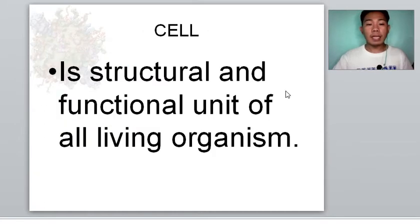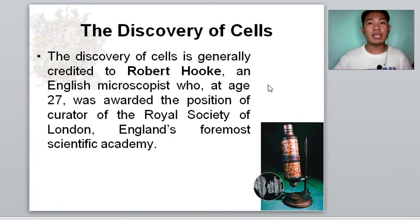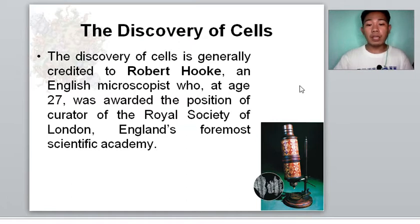As a review, the cell is defined as the structural and functional unit of all living organisms. Because of their small size, cells can only be observed with the aid of a microscope, which is an instrument that provides a magnified image of a tiny object. We do not know when humans first discovered the remarkable ability of curved glass surfaces to bend light and form images. The discovery of the cell is generally credited to Robert Hooke, an English microscopist, who at age 27 was awarded the position of curator of the Royal Society of London, England's foremost scientific academy.